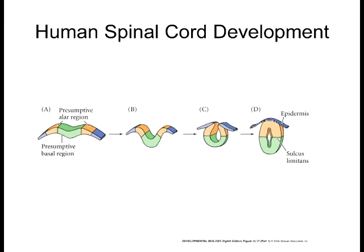This creates three main areas that form your spinal column. You've got the ventricular zone, which is right next to the lumen or the middle part of the neural tube. You've got the intermediate zone, which sometimes we call the mantle zone. And then you've got the marginal zone, which is the outer layer.